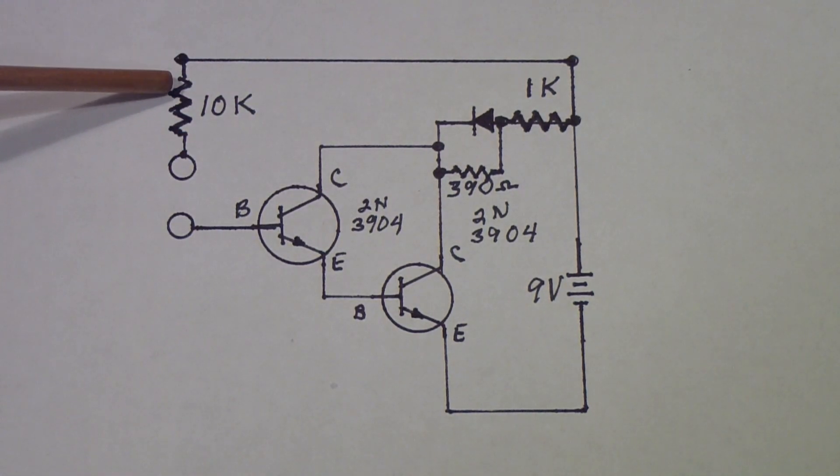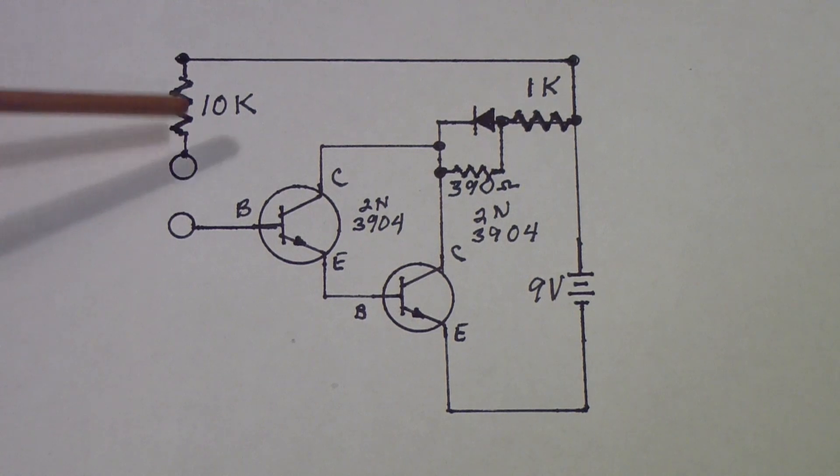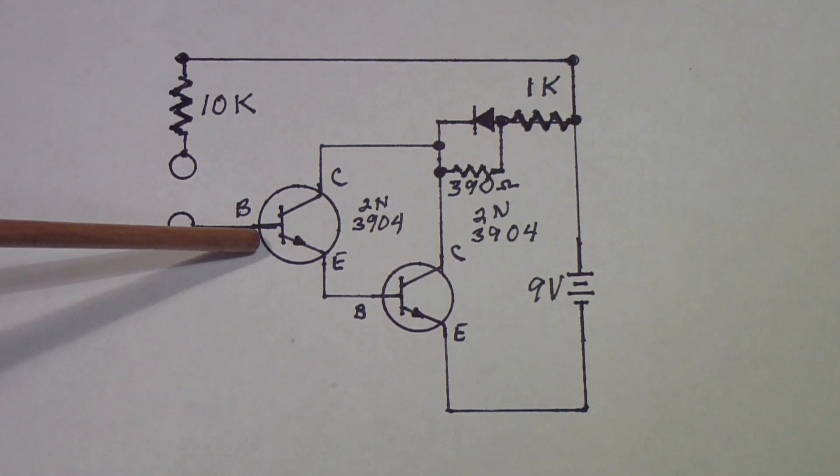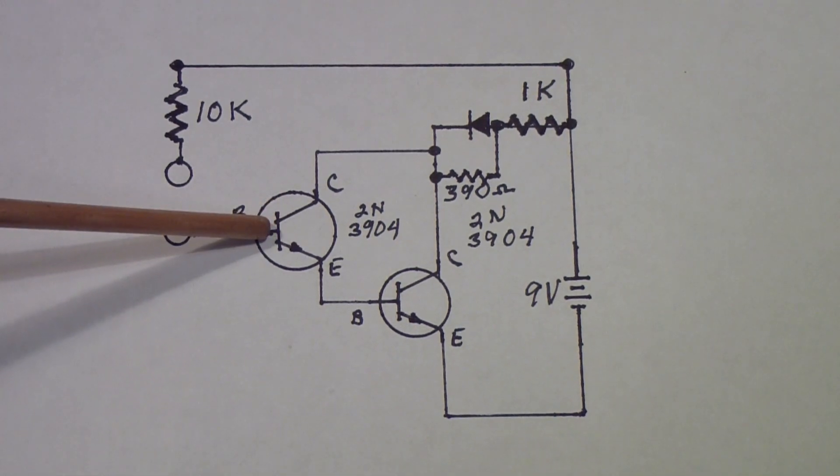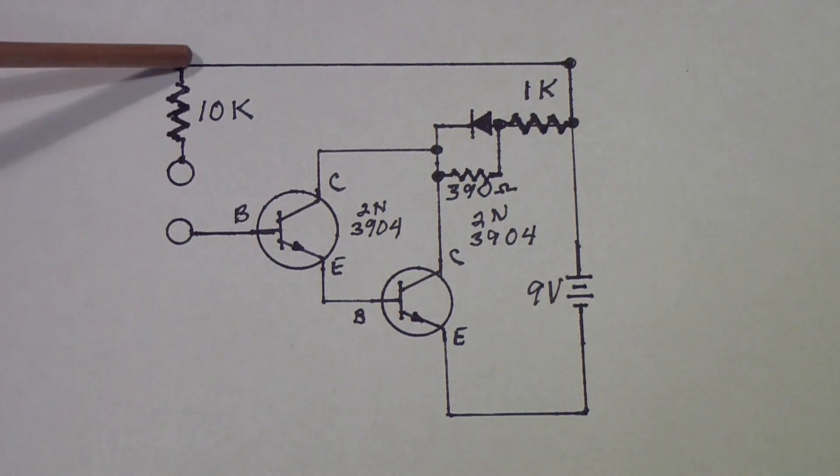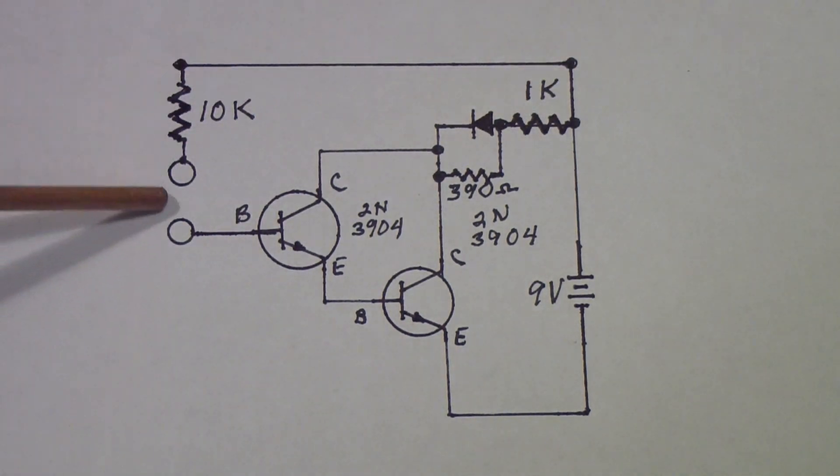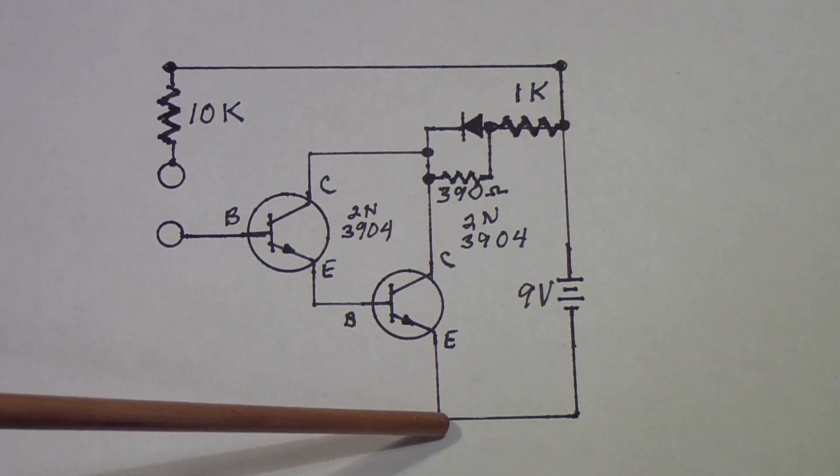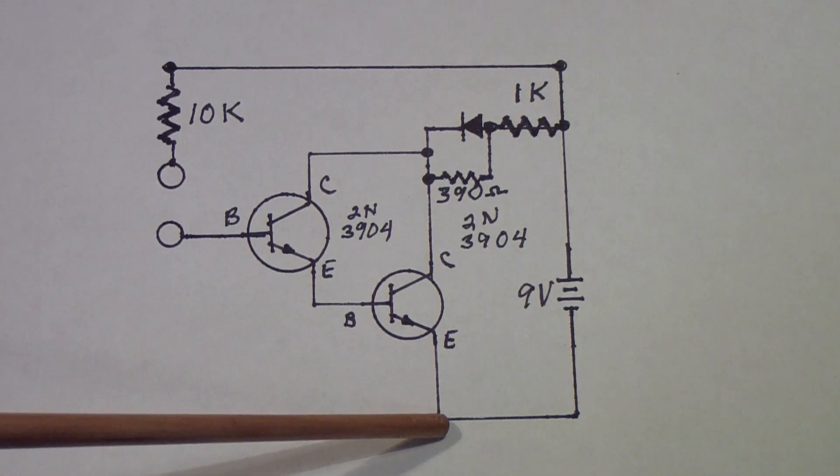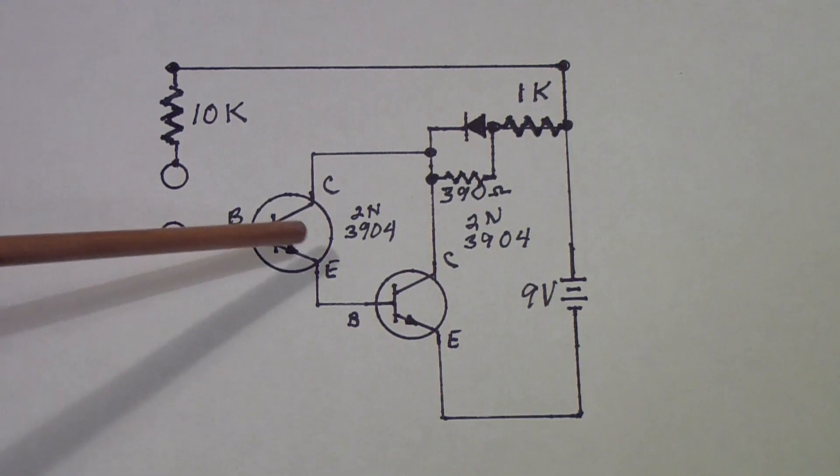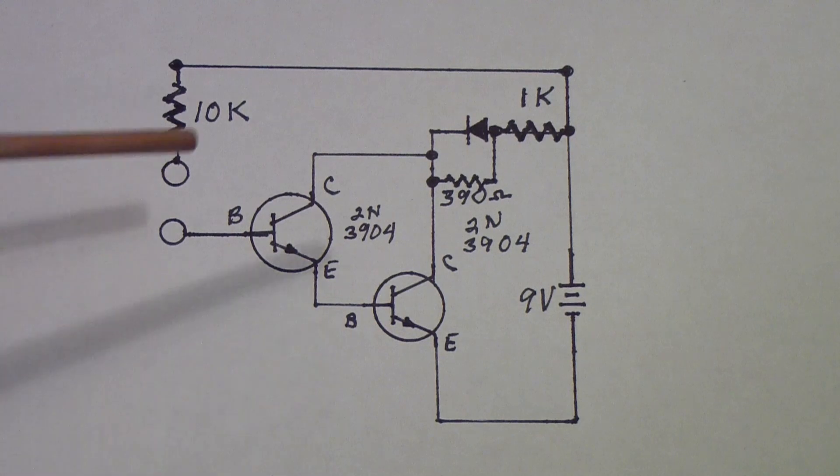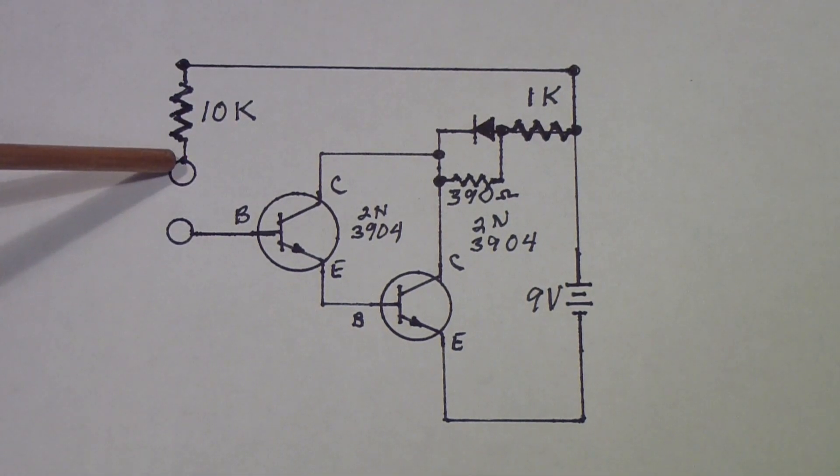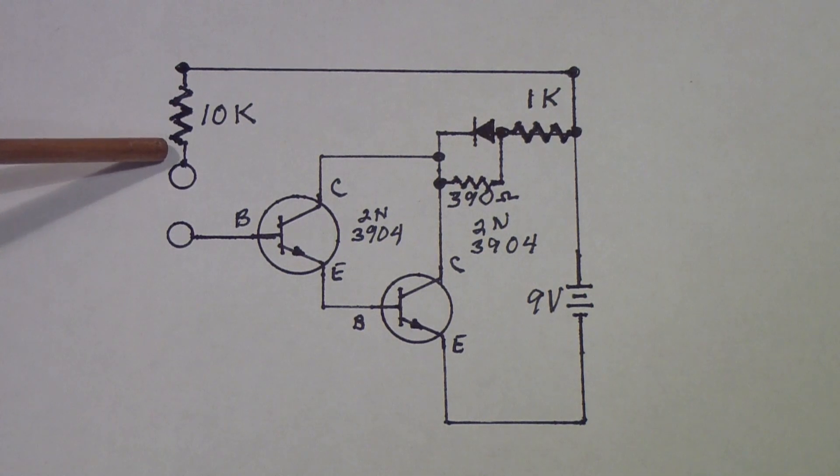This 10k resistor is just to limit the current into the base of this transistor. If the capacitor is shorted you don't want it to blow out this transistor. If you didn't have this resistor there you'd have nine volts on this point and ground on the emitter here, so you'd have a nine volt battery between this base through this base to this emitter and it would undoubtedly burn out these transistors. So you need something to limit the base current in case you have a shorted capacitor.